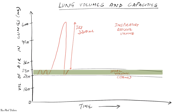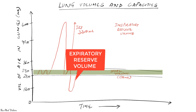Similar to the ability to inspire more than normal, we have the ability to expire — breathe out — more air from our lungs. That's called the expiratory reserve volume, or ERV. This is the amount of air we can expire more than normal, and it's about 1,100 to 1,200 milliliters.